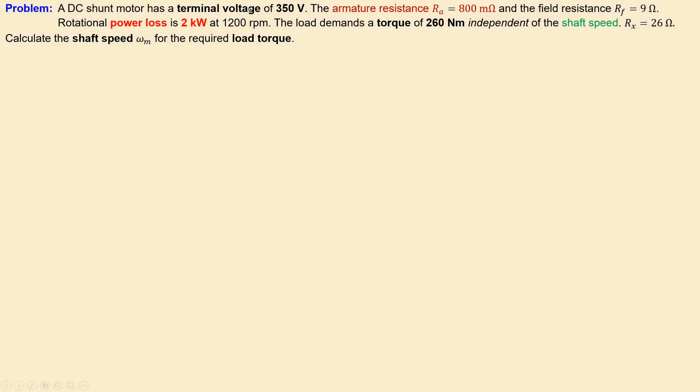We have a DC shunt motor with a terminal voltage of 350 volts, the armature resistance Ra is 800 milliohms and the field resistance Rf is given as 9 ohms. The rotational power loss is 2 kilowatts at the specific speed of the shaft and the load demands a torque of 260 newton meters independent of the shaft speed. In addition, the series resistance Rx is 26 ohms.